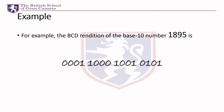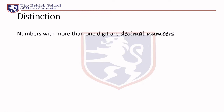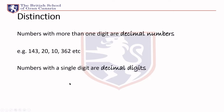Here's an example — a BCD rendition of the base-10 number 1895. What we do is simply split this number: so this digit is 5, this is 9, this is 8, this is 1, and so on. Numbers with more than one digit are decimal numbers, and numbers with a single digit are simple decimal digits in BCD — anything from zero through to nine.